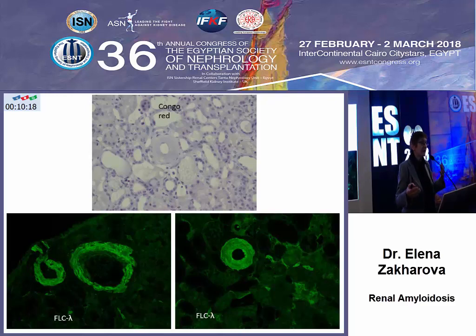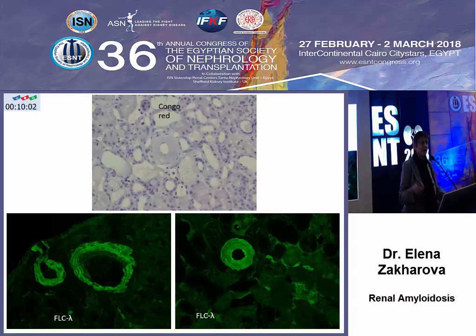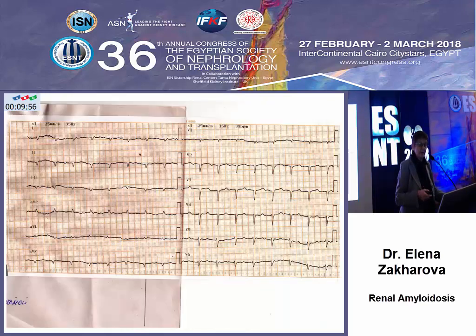And even in a situation where amyloidosis is mostly distributed in the arterial walls, this is a different clinical type: when the glomerulus is damaged, we have nephrotic syndrome; when vessels are dominantly damaged, we have progressive kidney failure without nephrotic syndrome. We can also observe a combination of these two types, and even three types when there is dominant interstitial deposition of amyloid.